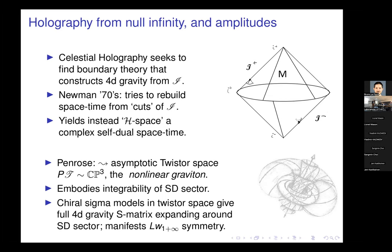More recently, following from the twister string, what I'll discuss in the second half of the talk is how worldsheet sigma models in twister space — holomorphic maps into twister space — can be used to construct the full 4D gravity S-matrix. This takes you beyond the self-dual sector. Between the seventies and the noughties, twister theory was confined to studying the self-dual sector of gravity and Yang-Mills, but with the advent of the twister string we could perturbatively get access to the whole of Yang-Mills and gravity theories.